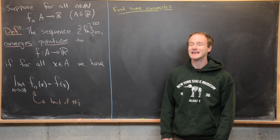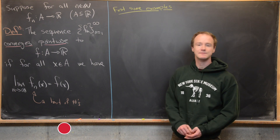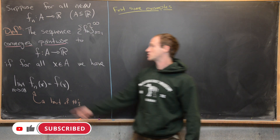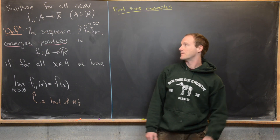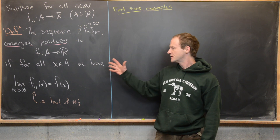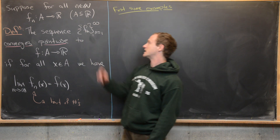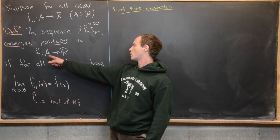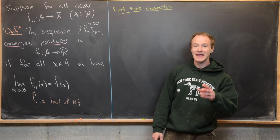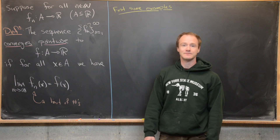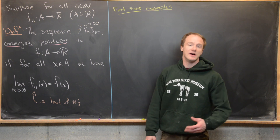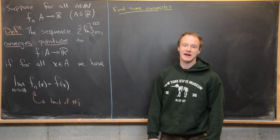Here we're going to begin looking at the notion of sequences of functions. For all natural numbers n, we have a function f_n from A to the real numbers, where A is a subset of the real numbers. The sequence f_n converges pointwise to the function f, also from A to ℝ, if for all x in A, the limit as n goes to infinity of f_n(x) equals f(x).